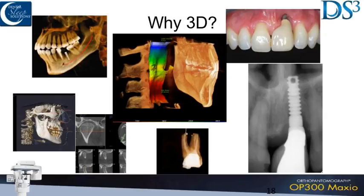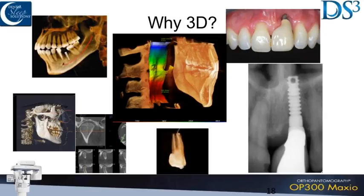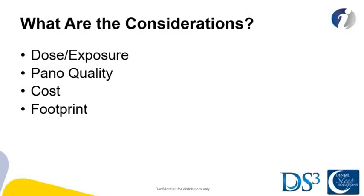All the uses you see on screen are things general dentists use. I'm using it primarily for TMD and sleep. Considerations when purchasing a unit include: radiation dose, panorex capability, cost, space, and the footprint of the machine. The biggest consideration is what you want to do in your office — find a machine that fits your office rather than making your office fit the machine.